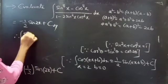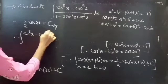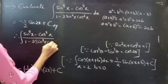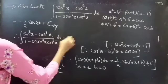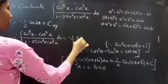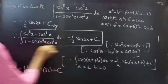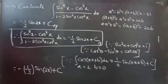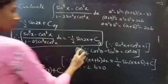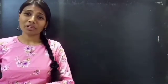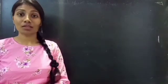Therefore, integral of sin power 8x minus cos power 8x divided by 1 minus 2 sin squared x into cos squared x into dx equals minus 1 by 2 sin 2x plus constant c. This completes the problem. We have seen a problem from integrations in this video. Hope you understand. We'll see you in the next video. Bye-bye.